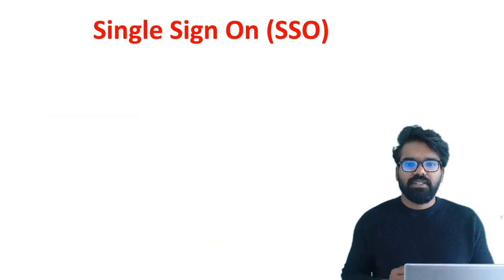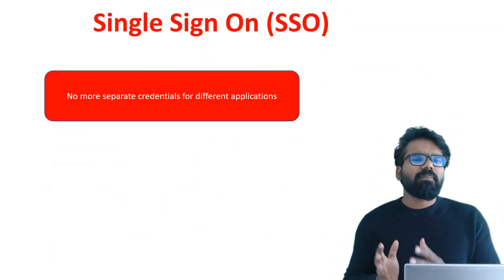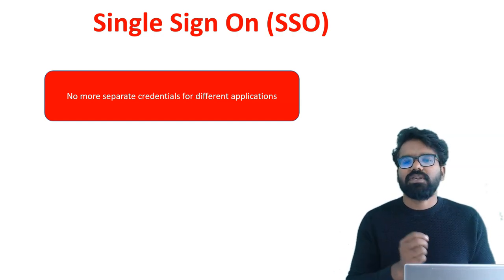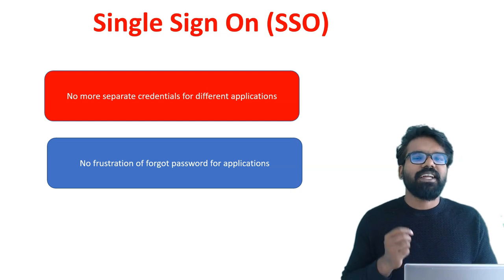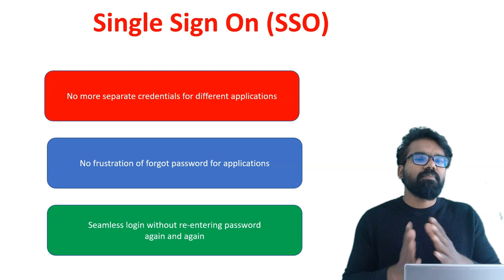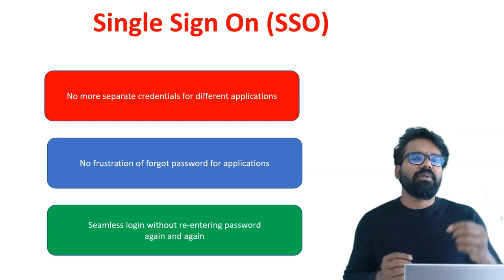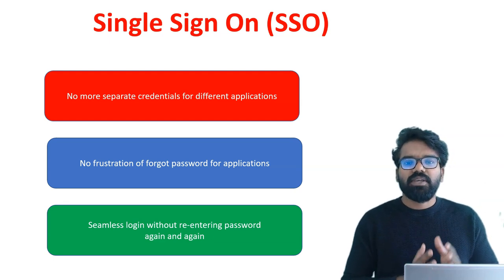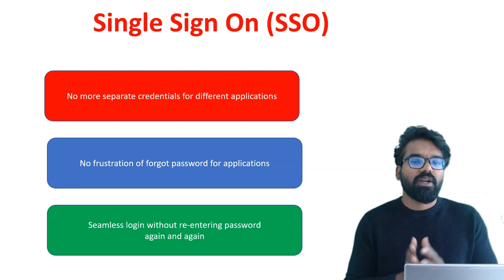With single sign-on, you get one set of authentication or login credentials with which you can access different applications. You don't need to have separate passwords. Let's look at some advantages of using single sign-on. First, no more separate credentials for different applications — you have one set of credentials to log in and access different applications. Next, there is no frustration of a forgotten password; you don't need to reset your password again and again. Third, you can seamlessly access different applications without being presented with a login page every time. There is a slight disadvantage on the security side — if the password is compromised, the hacker may get access to different applications.